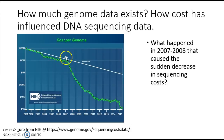Once we got that new sequencing technology, these costs plummeted. In fact, the Illumina company predicts that we should be able to sequence a human genome for perhaps as low as $100 in raw sequencing costs within the next 5 to 10 years.